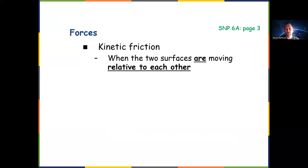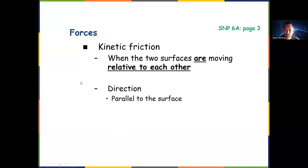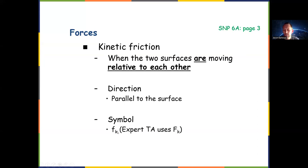Kinetic friction occurs when two surfaces are moving relative to each other. If you push the couch to the right and it moves, kinetic friction acts to the left. In the book-and-calculator example, if I move the book really fast, the calculator slides — that's kinetic friction. The direction is parallel to the surface and opposite the direction of motion. The symbol for kinetic friction is lowercase f subscript k.